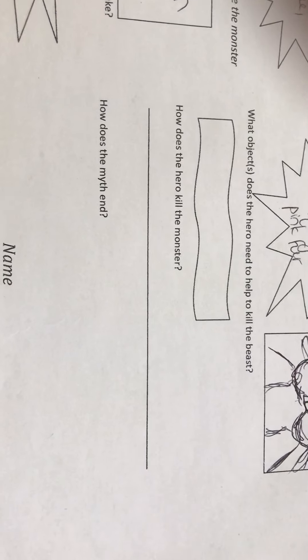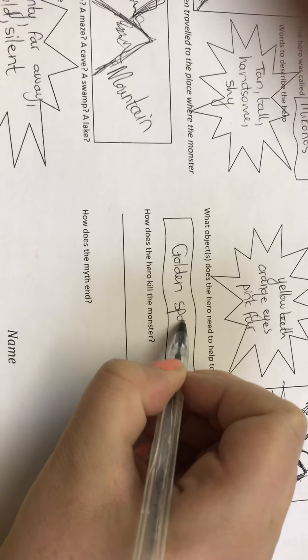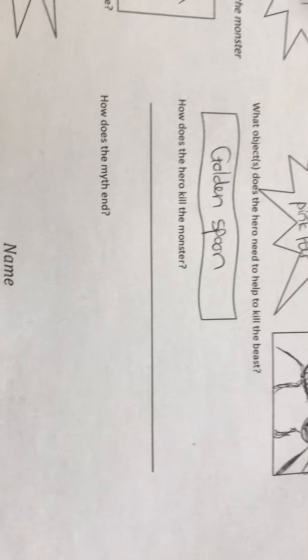Then next part: what object does the hero need to help kill the beast? Now you can say it used a sword or what. I'm going to say the hero killed the beast with a golden spoon. My hero killed the beast Rab Cat. Mykunos killed the beast Rab Cat with a golden spoon.